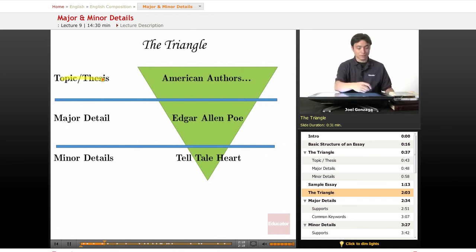Well, I bet that one of those major details is going to be Edgar Allan Poe. What did Edgar Allan Poe write? Well, that's a minor detail, the telltale heart. So, that is how I would divide up that particular triangle between topic, major, and minor details.